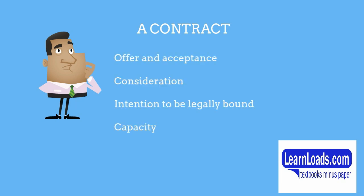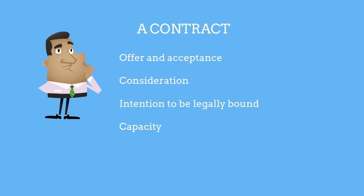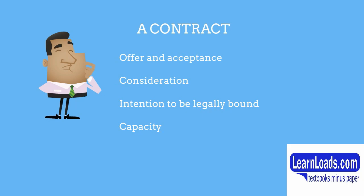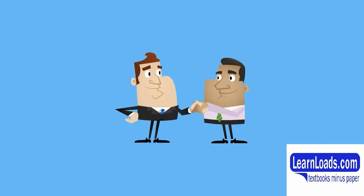These essential elements are: number one, offer and acceptance; number two, what's called consideration — that means that both parties have exchanged something of value; number three, there's an intention to be legally bound; and number four, what's called capacity. But we're looking today at offer and acceptance.